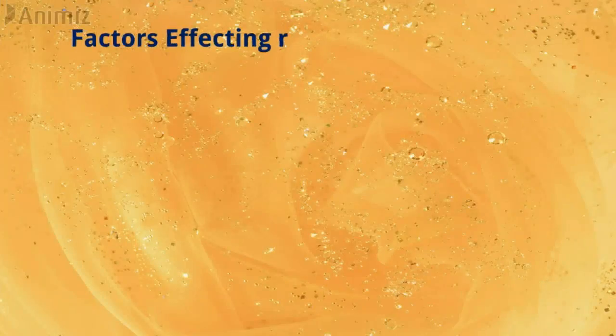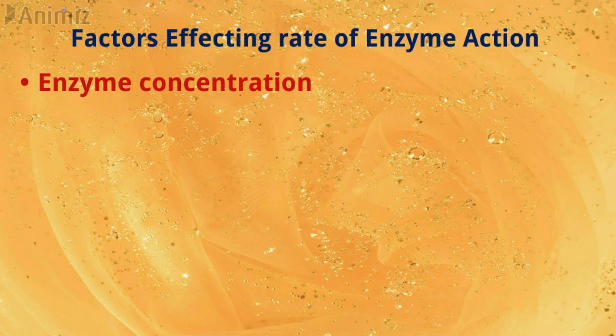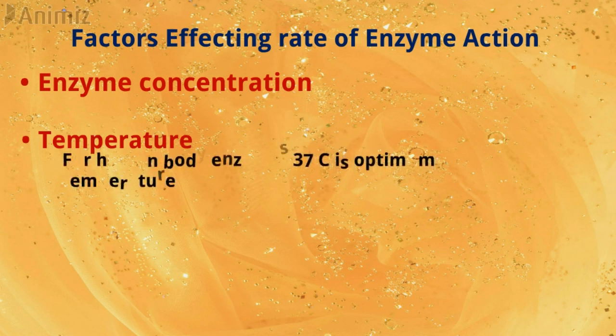Factors affecting the rate of enzyme action: first is enzyme concentration. The rate of reaction depends directly on the amount of enzyme present — if the amount of enzyme is doubled, the rate of reaction is also doubled. The rate of reaction may also increase with an increase in temperature, but only up to a certain limit. For enzymes of the human body, 37 degrees Celsius is the optimum temperature.